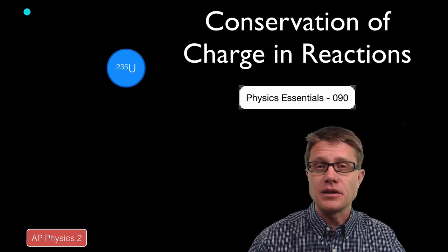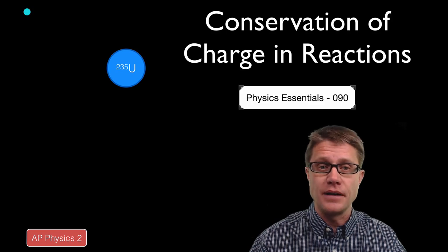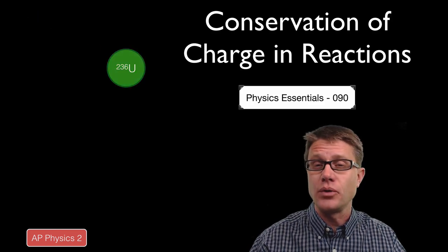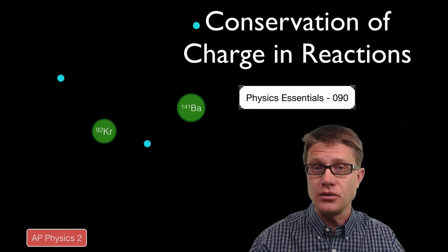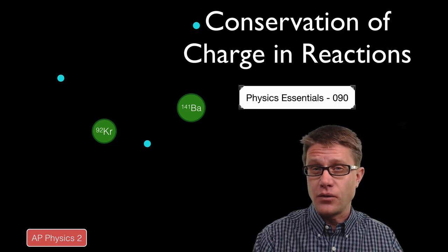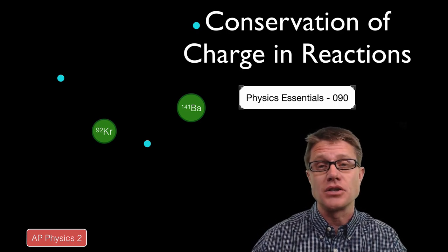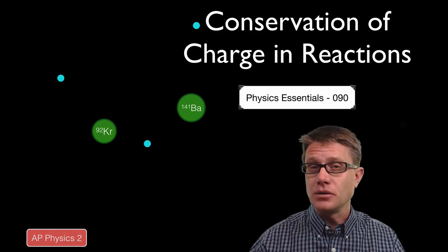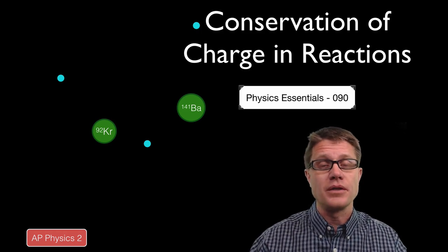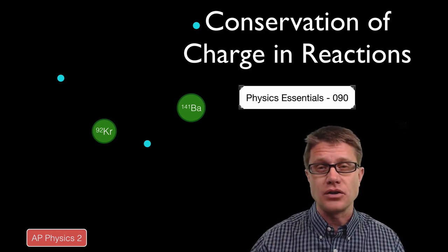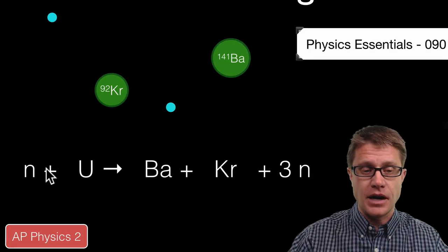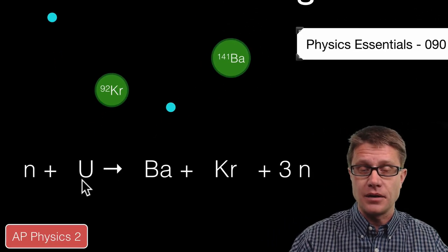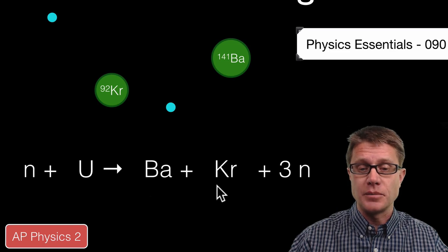Let's look at the fission of uranium-235. So if we hit it with a neutron it will quickly break apart into barium-141 and krypton-92. So we have on the left side a neutron plus a uranium atom equals a barium plus a krypton plus three neutrons.